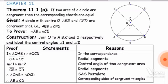We have to prove that both chords are equal if the arcs are equal. In the given statement: a circle with center O, arcs AEB and CFD are congruent — that is, arc AEB is congruent to arc CFD. What we have to prove is that chord AB is congruent to chord CD, since arc AEB is congruent to arc CFD.